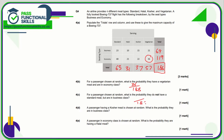For part c, for a passenger chosen at random out of 188, what's the probability that they do not have a standard meal but are in business class? That's not standard but in business, so that's 10 plus 15 plus 21.